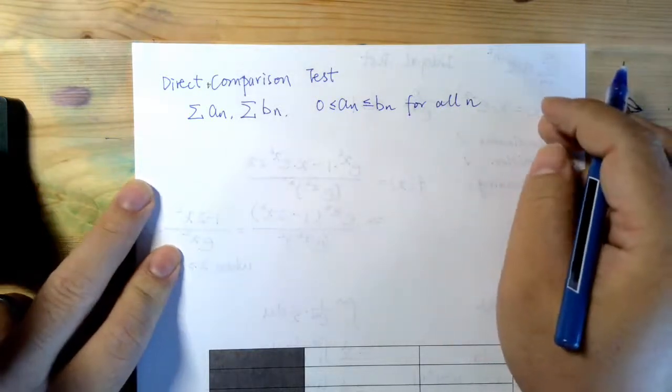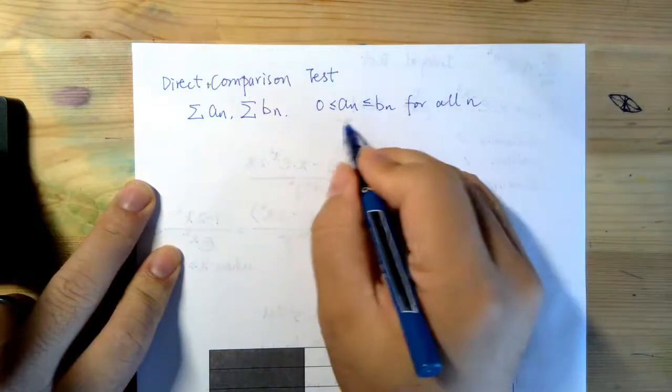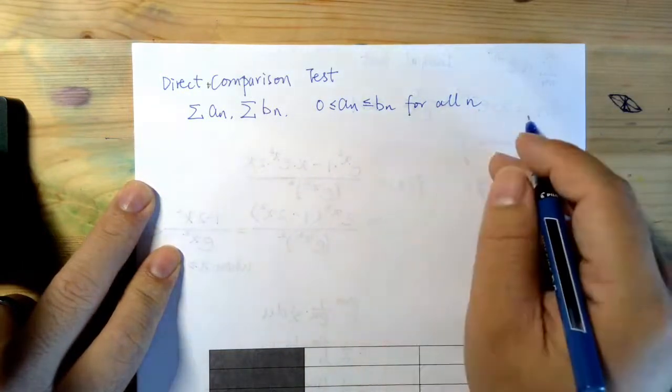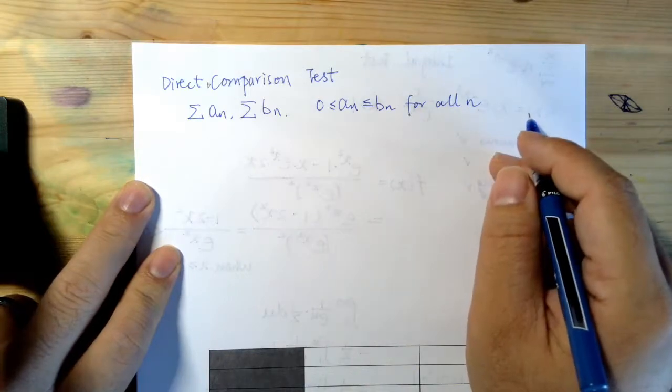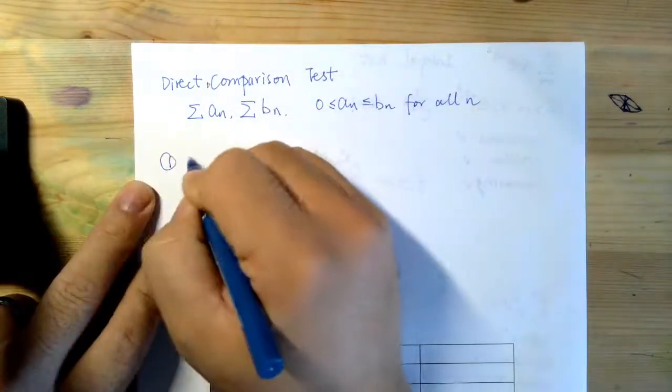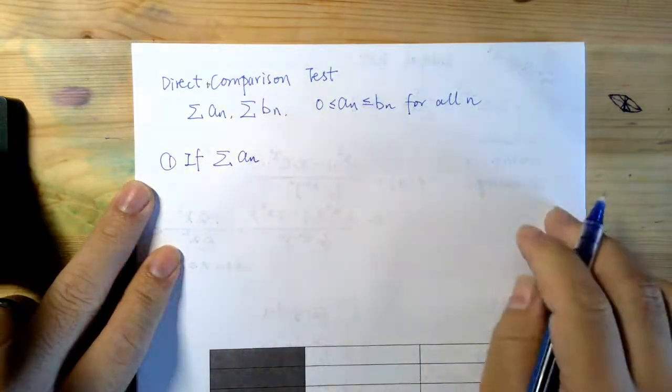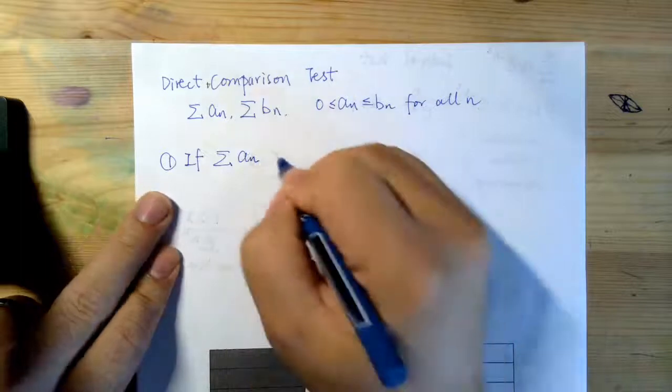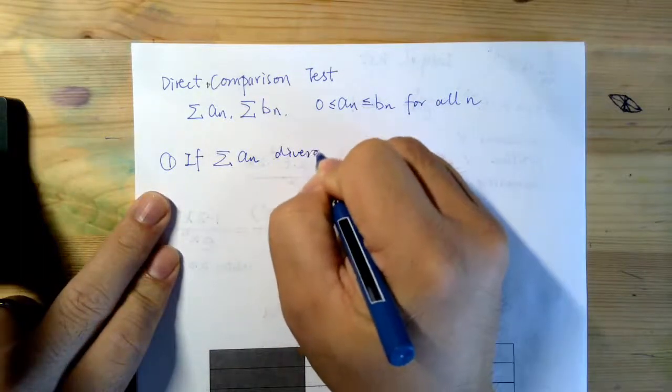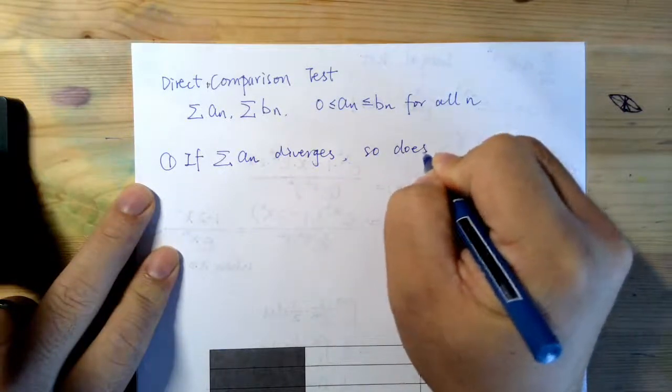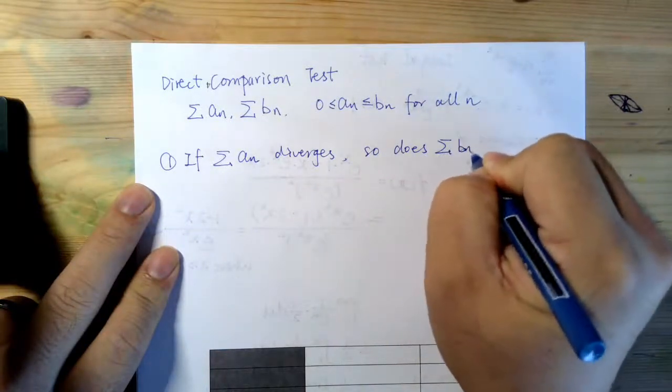So apparently the summation of a_n, less or equal to summation of b_n. So the direct comparison test says like this. If series a_n diverges, so does series b_n.